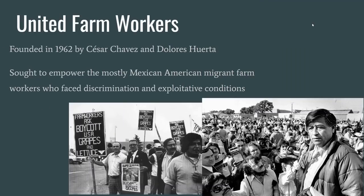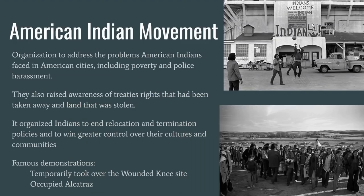There are also several other movements in this era. The United Farm Workers, led by Cesar Chavez and Dolores Huerta, sought to empower mostly Mexican-American migrant farm workers facing discrimination and exploitative conditions. The American Indian Movement, or AIM, addressed problems American Indians faced in cities including poverty and police harassment, raised awareness of stolen treaty rights and land, and organized protests against relocation and termination of treaty rights policies. Famous demonstrations included temporarily taking over the Wounded Knee site and occupying Alcatraz Island for 18 months.